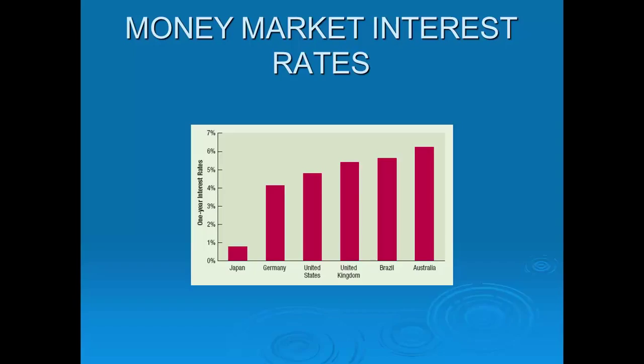Why are interest rates so different across countries? One reason is inflation — Japan has very low inflation, which is one reason its interest rates are very low. Another factor is the demand for money: when an economy is not doing well, there is less demand for money. Brazil has been a high-growth country with strong demand for money and higher inflation, both contributing to higher interest rates.